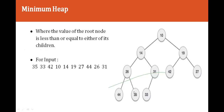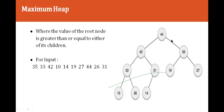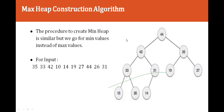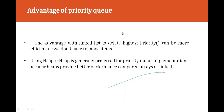An example of a minimum heap tree: when the value of the root node is less than or equal to either of its children. Given the input 35, 33, 42, 10, 14, 19, 27, 44, 26, 31 — the root is smaller than its children in a min-heap. For a max-heap, the root node is greater than or equal to either of its children. The procedure to create a minimum heap is similar, but we select minimum values instead of maximum values.